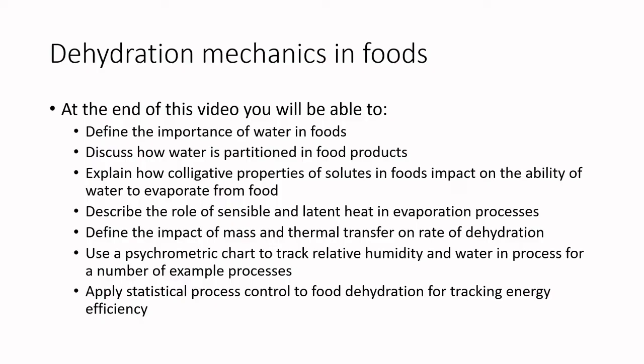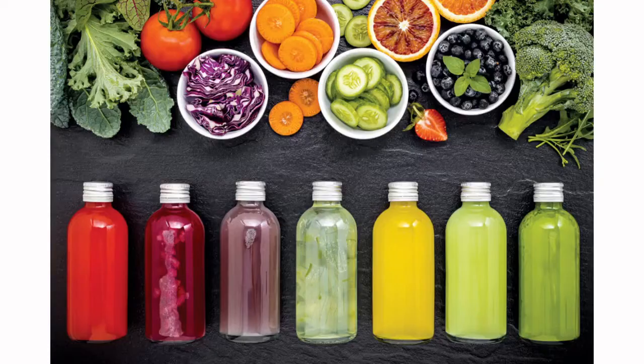Today we'll define the importance of water in foods, discuss how water is partitioned in food products, explain how colligative properties of solutes impact water's ability to evaporate from food. We'll describe the role of sensible and latent heat in evaporation processes, define the impact of mass and thermal transfer on rate of dehydration, use psychrometric charts to track relative humidity and water in process, and apply statistical process control to food dehydration for tracking energy efficiency. That sounds overwhelming, but we're taking this step at a time.